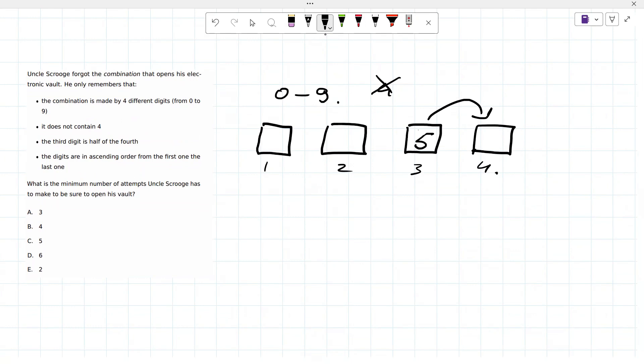Guys, don't be shy. It says the third digit is half of the fourth. If you know that the third digit is five, what's the value of the fourth one? It's ten. Yeah, but we have a problem with ten because we can take numbers from zero until nine. So that's why the five cannot be the third digit.